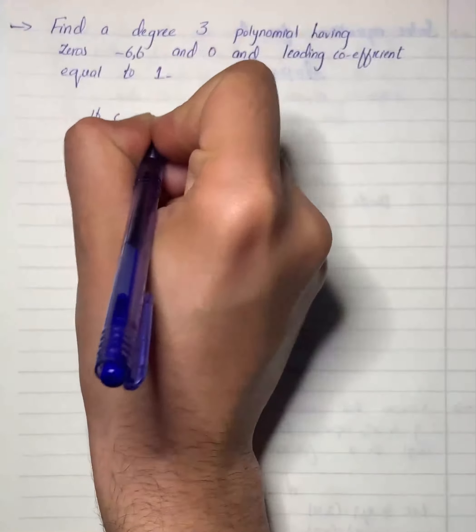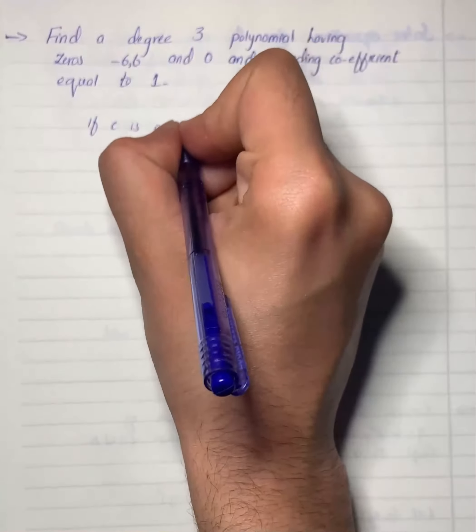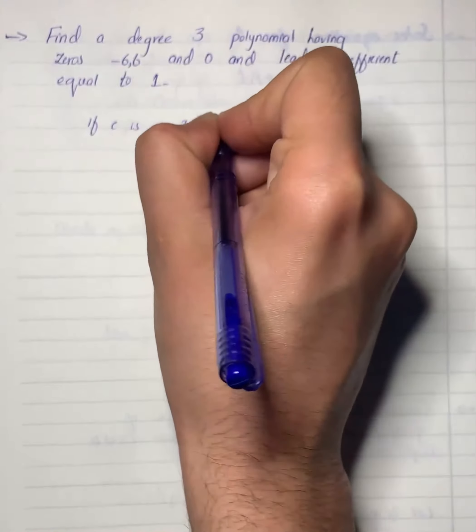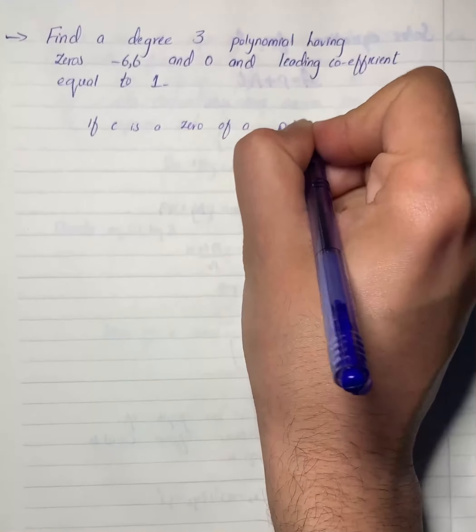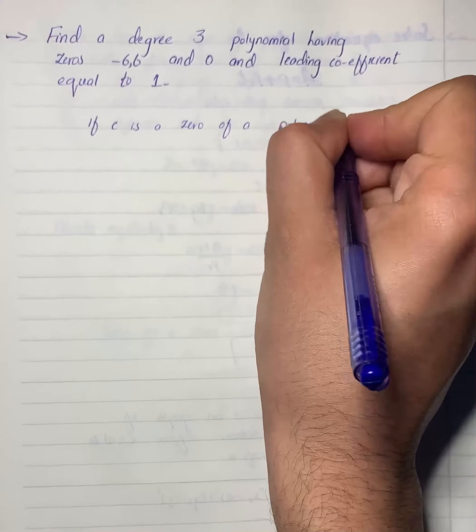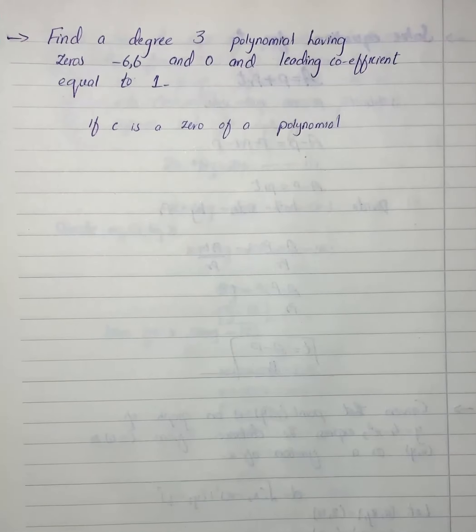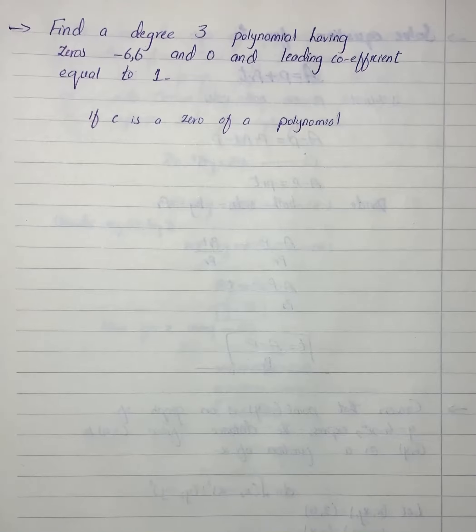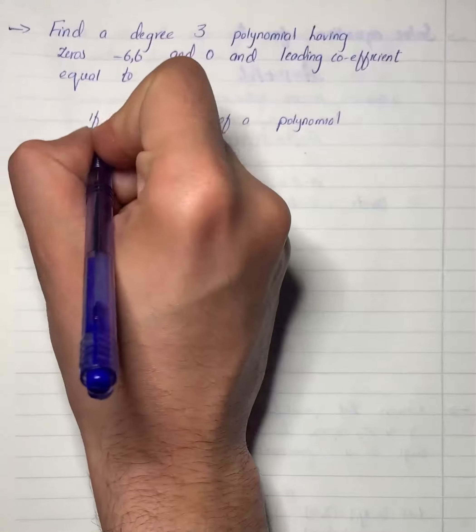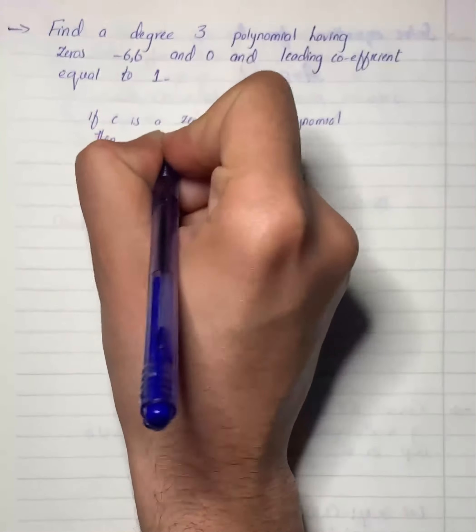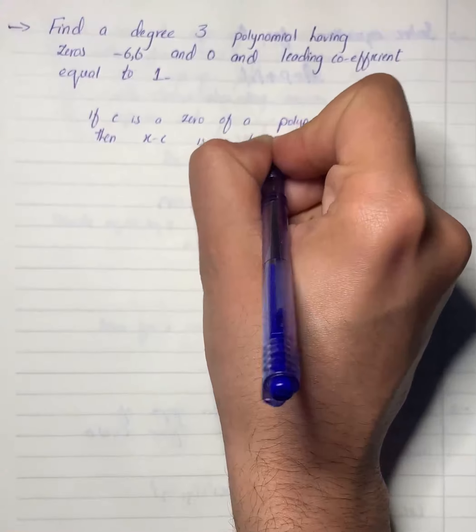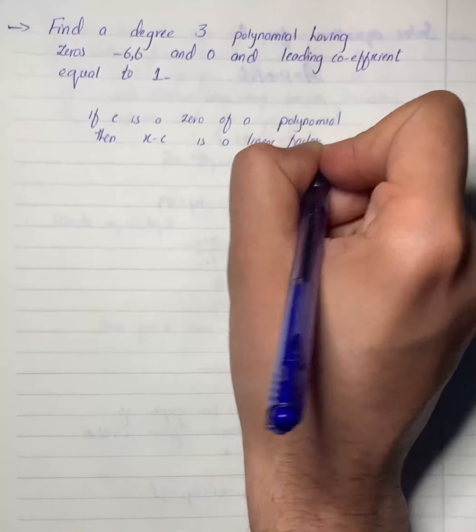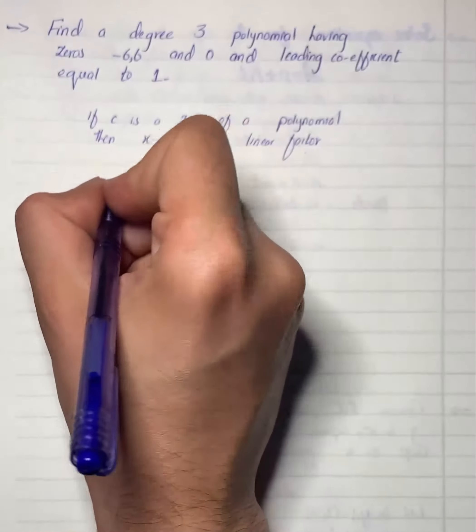If c is a zero of a polynomial, then x minus c is a linear factor for that function, right? So given zeros are -6, 6, and 0.